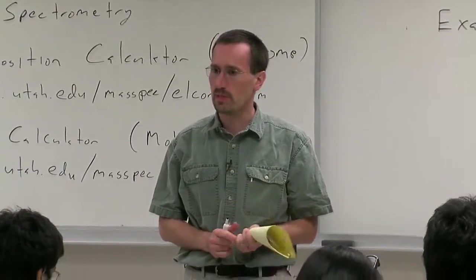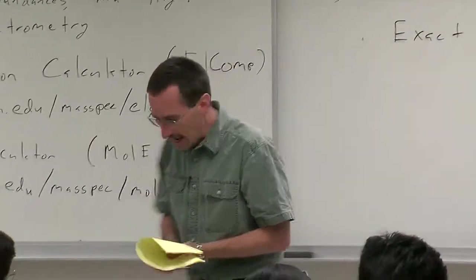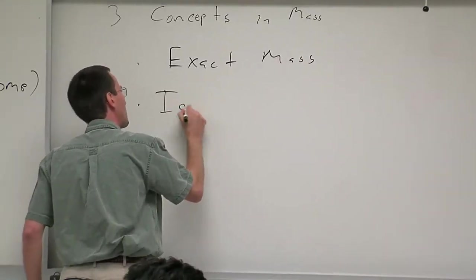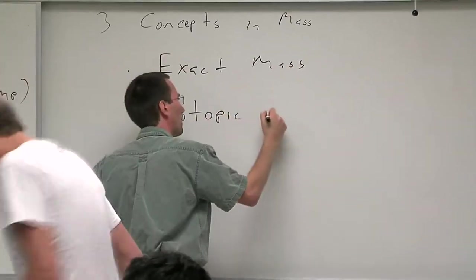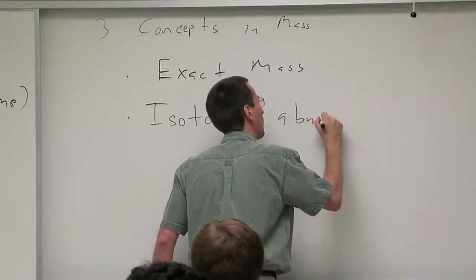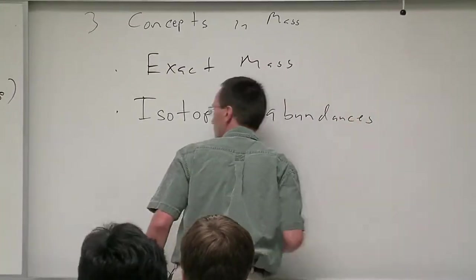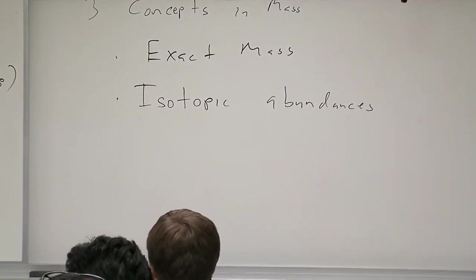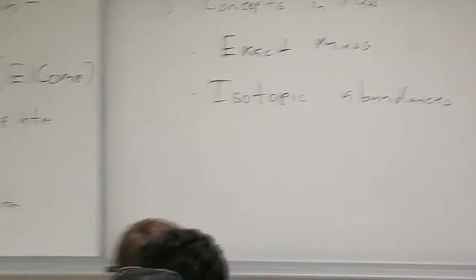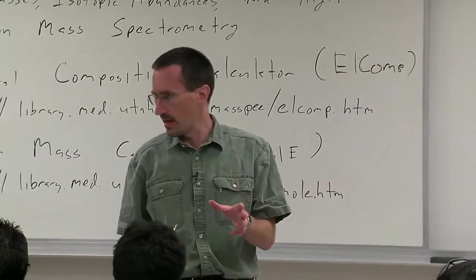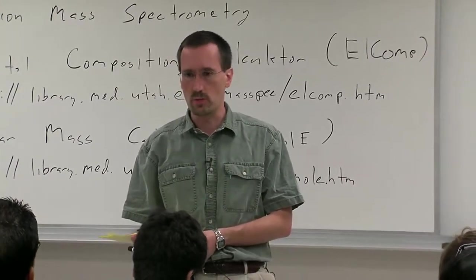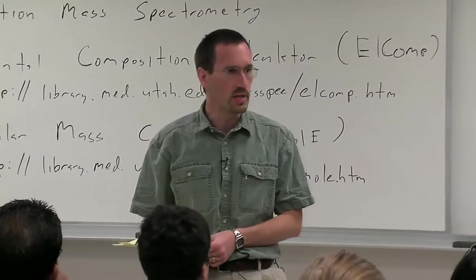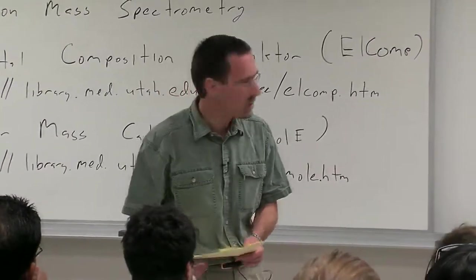We need to get used to thinking about the masses of individual isotopes. The second big idea which ties into that is isotopic abundances, the fact that different elements have different abundances of different isotopes. Carbon for example has 1.1 percent of its carbons as C13 and the rest is carbon 12. Sulfur has a little bit of S34 in addition to S32.